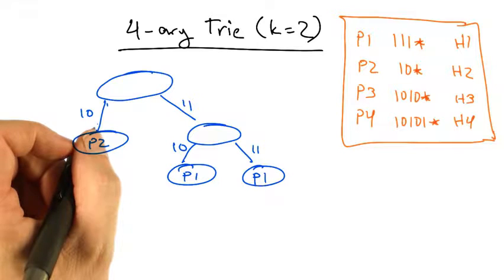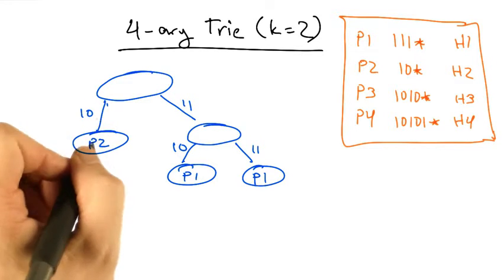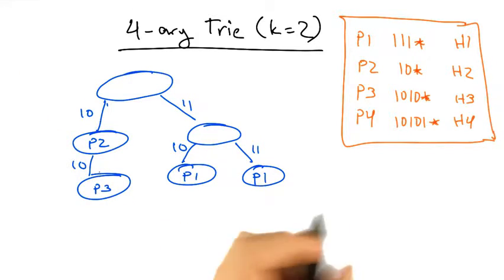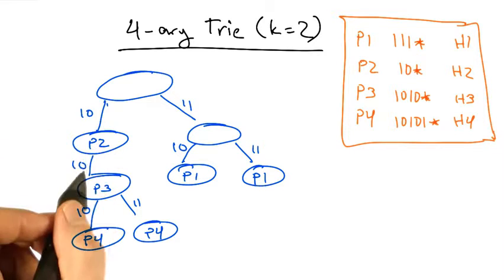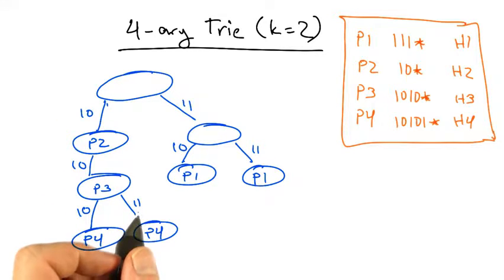1, 0 star results in just one entry. 1, 0, 1, 0 star results in two traversals. And 1, 0, 1, 0, 1 star, again, represents two entries, for 1, 0, 1, 0, 1, 0, and 1, 0, 1, 0, 1, 1.